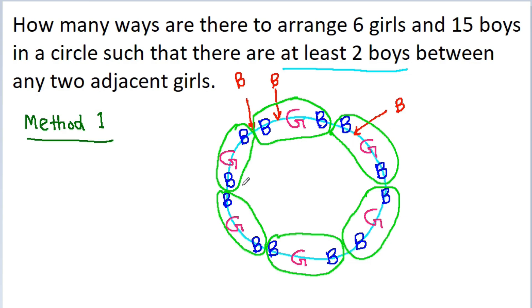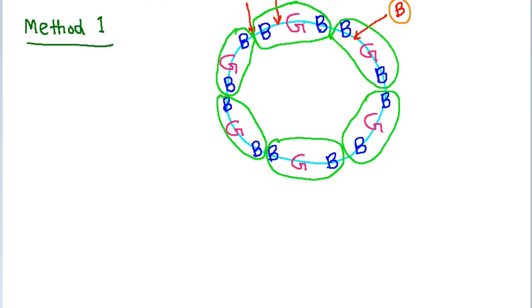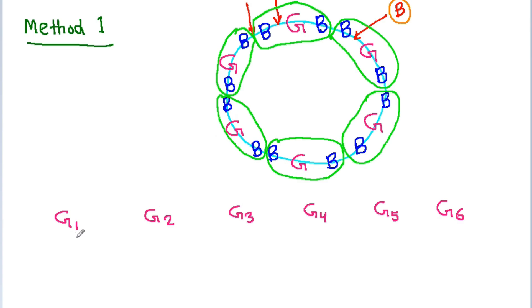We have to arrange these 6 groups and these 3 extra boys in a circle, giving us 9 objects total. We have 6 girls G1, G2, G3, G4, G5, and G6. To make the group for G1, we select 2 boys out of 15 boys in 15C2 ways, and these 2 boys can also be arranged in 2! ways. For G2, we have 13 boys left, select 2 boys in 13C2 ways, and arrange them in 2! ways.